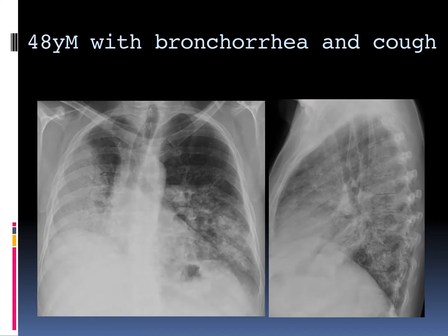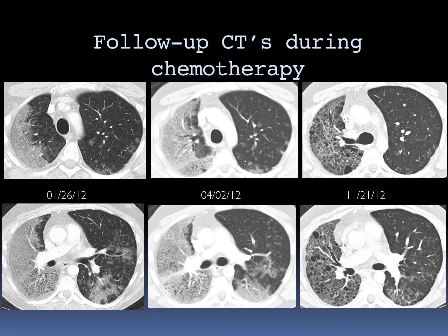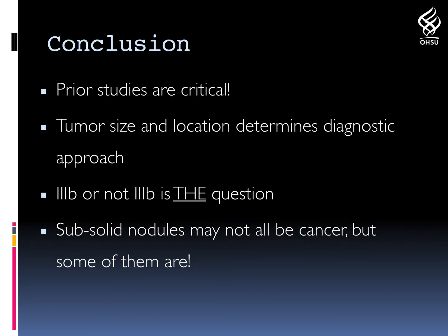Our last case is a 48-year-old never-smoker with bronchorrhea and cough. You can see extensive bilateral ground glass opacities in both lungs. This is a patient who had mucinous adenocarcinoma. These patients often present with bronchorrhea, crazy paving with bulging fissures, and these cancers are highly avid on PET. They are not generally associated with smoking. Follow-up during targeted chemotherapy — because the patient had an underlying genetic mutation — showed the cancer vanishing with the underlying lung parenchyma preserved.